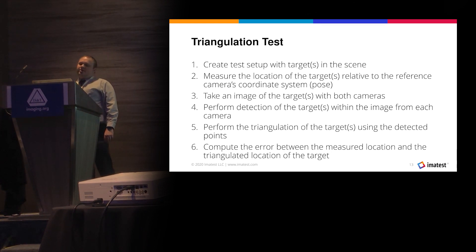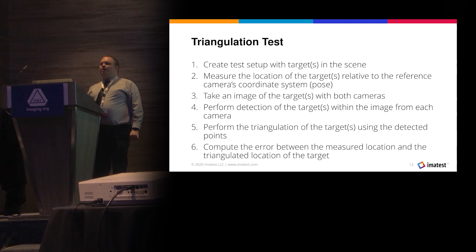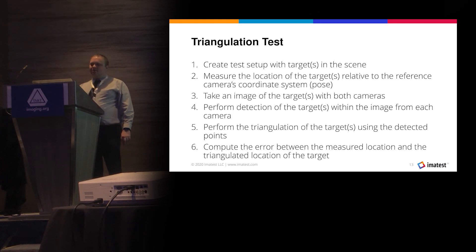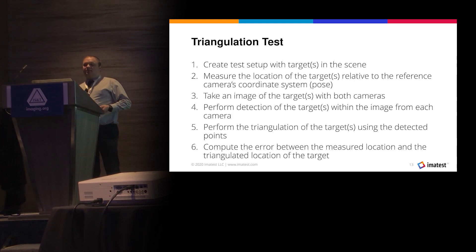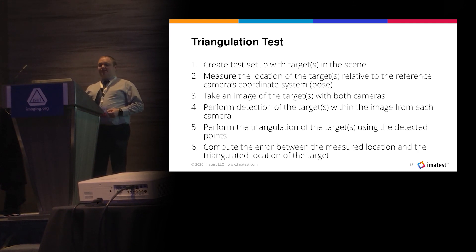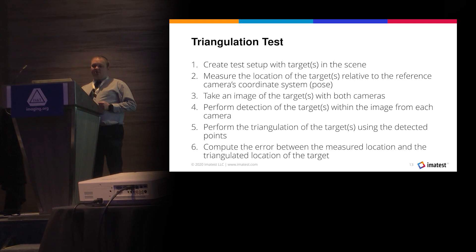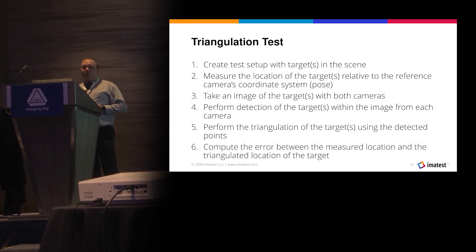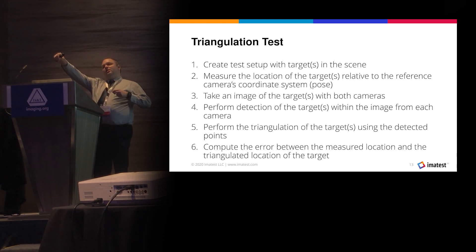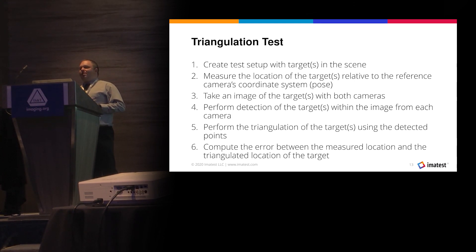The third test is a triangulation test, which requires a stereo pair. It's a very similar test setup: you create your test setup with some number of targets in the scene, measure the location of the targets relative to the reference camera coordinate system, capture an image of the targets with both cameras, perform detection of the targets within the image from each camera, and then perform a triangulation of the target using the detected points. Your error is then the difference in the distance between the known location of the target and the one that was triangulated.